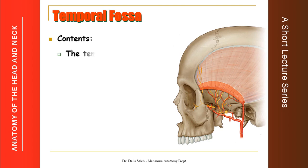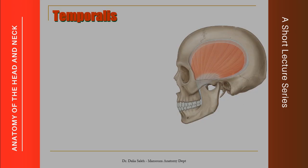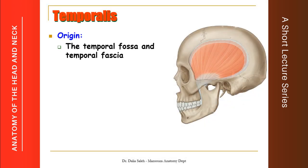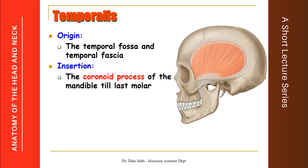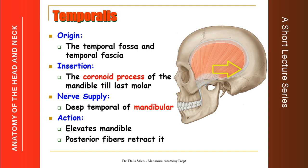The temporal fossa contains the temporalis muscle, and the deep temporal nerves and vessels. Superficial to the fascia will be the superficial temporal nerve and vessels. The temporalis muscle takes origin from the temporal fossa and the overlying temporal fascia. It is inserted into the coronoid process of the mandible and extends downward on the anterior border of the ramus of the mandible down to the area behind the last lower molar tooth. It is supplied by the deep temporal nerve, a branch of the mandibular nerve. Its anterior and middle fibers elevate the mandible, while its posterior fibers retract the mandible.